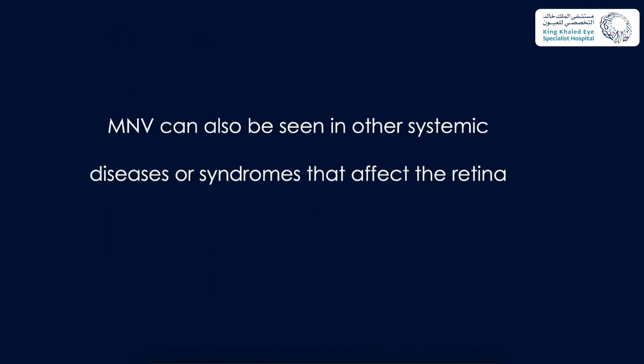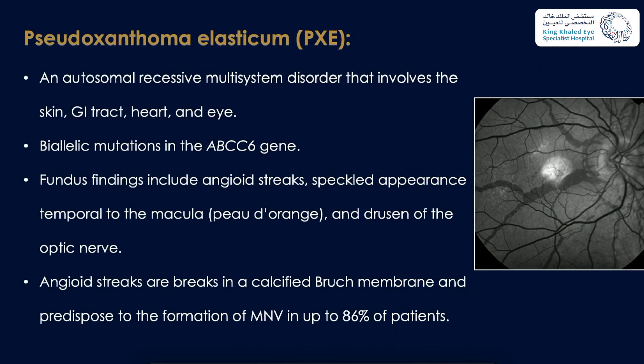Macular neovascularization has also been seen in systemic diseases affecting the retina, such as pseudoxanthoma elasticum — an autosomal recessive multisystem disorder involving the skin, GI, and eye, caused by biallelic mutations in ABCC6. The fundus shows angioid streaks, a peau d'orange appearance temporal to the macula, and a halo around the optic nerve. Angioid streaks are breaks in a calcified Bruch's membrane and predispose to macular neovascularization formation in up to 86% of patients.